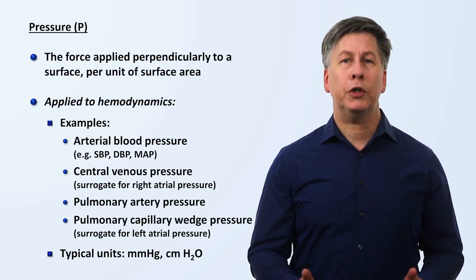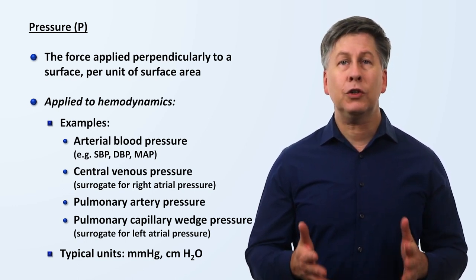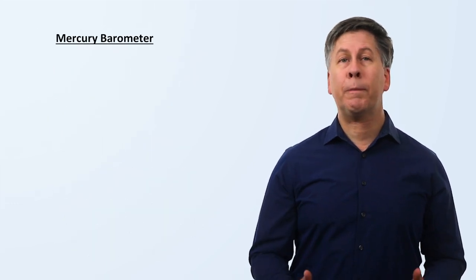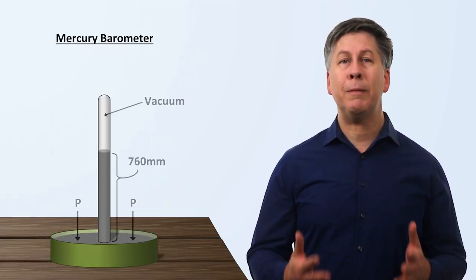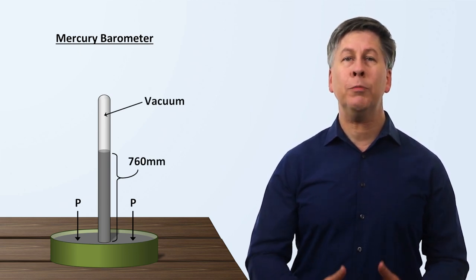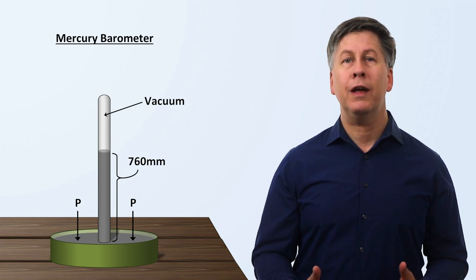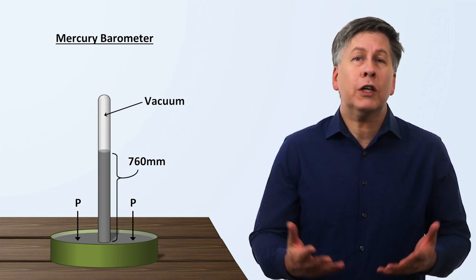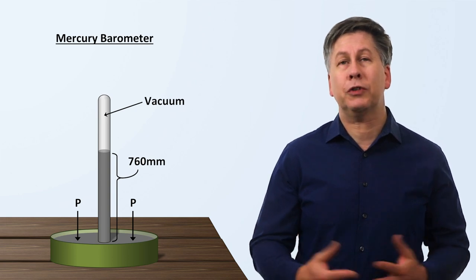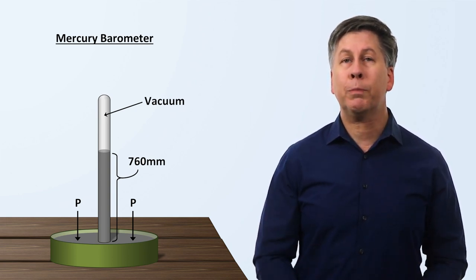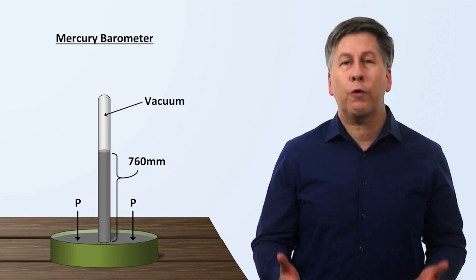These unusual units both come from the potential use of these fluids in barometers. For example, a pressure of 760 millimeters of mercury is the pressure necessary to support a column of mercury 760 millimeters in height. The units, they're just a consequence of a quirk of history, that we originally used mercury barometers to measure pressure, and now we're unfortunately stuck with them.